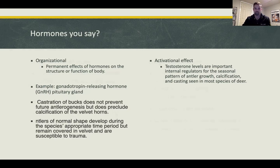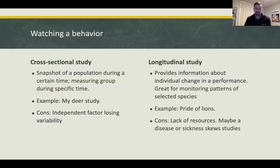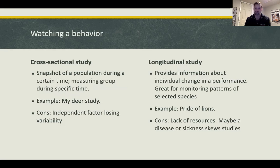Watching behavior is another important area. Now that we've covered hormones and proximate versus ultimate, we look at how to observe behavior. There are two types of studies: cross-sectional and longitudinal. A cross-sectional study is a snapshot of the population during a certain time — measuring a group during a specific period. A con is that independent factors can lose variability.